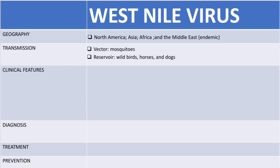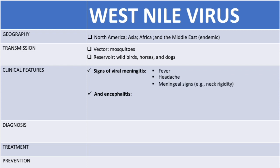The main serious form of the West Nile virus is the neuroinvasive form. We can divide the signs into the signs of viral meningitis, which include fever, headache, and the actual meningeal signs like neck stiffness.